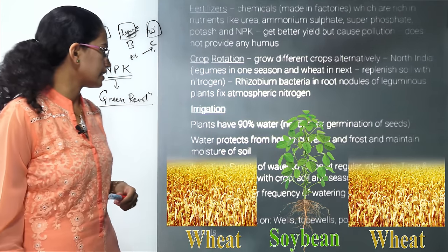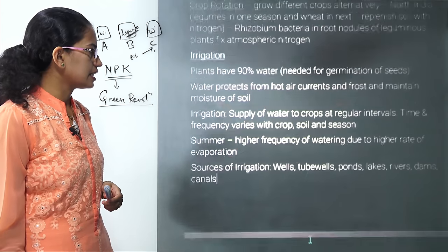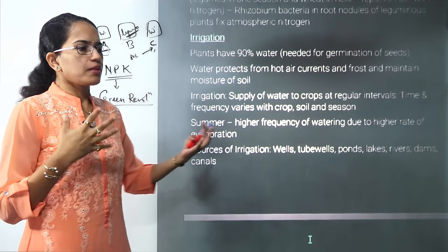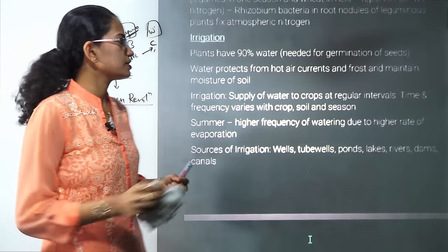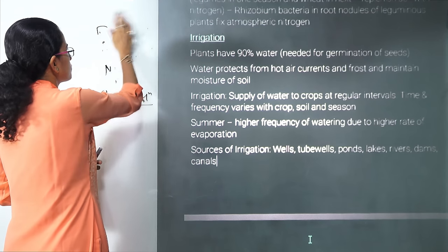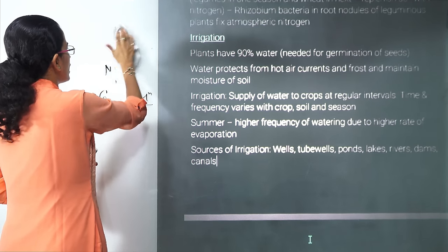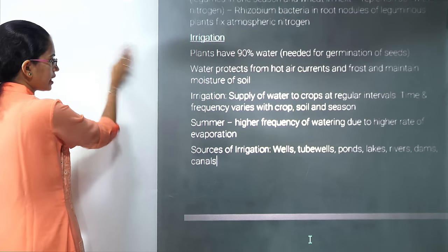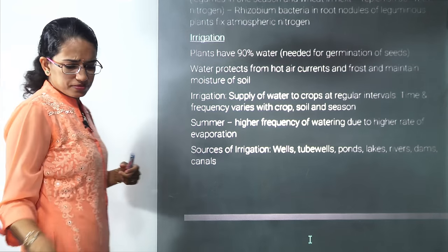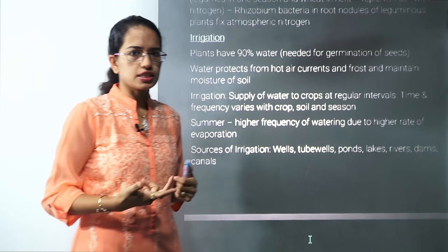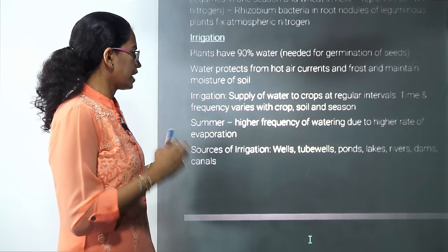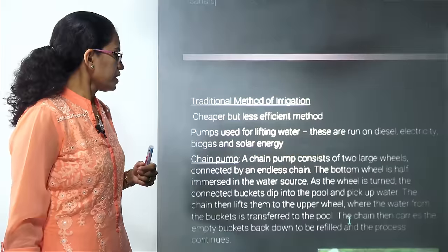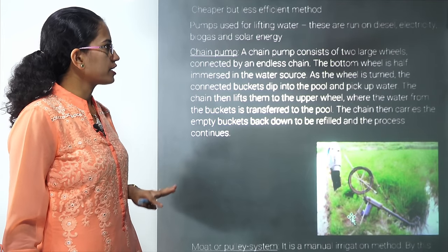Irrigation means watering the soil. Plants require at least 90% water for germination of the seed itself. Water is also required to protect crops from hot currents and hot air and to provide ample moisture. Irrigation can be done in various ways — both traditional and modern methods.